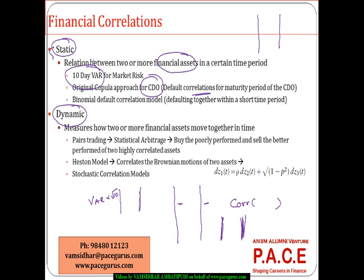So the correlation could be defined on a static basis or on a dynamic basis. On a dynamic basis, on a daily basis, I would be seeing whether the correlation has really improved, worsened, gone up, or gone down — how two or more financial assets are changing on a regular basis. That is what we are calling dynamic correlation.